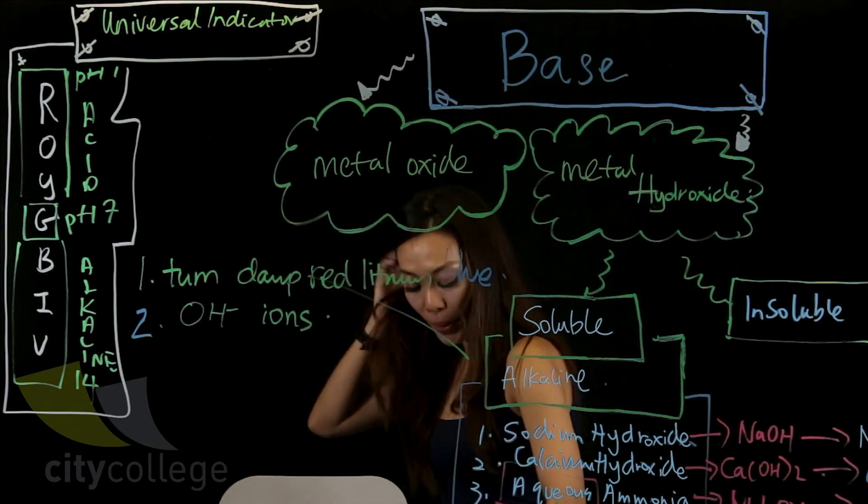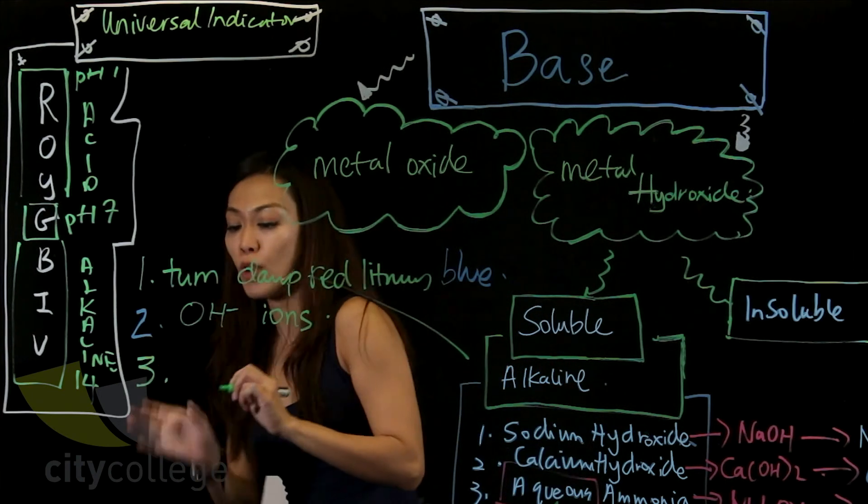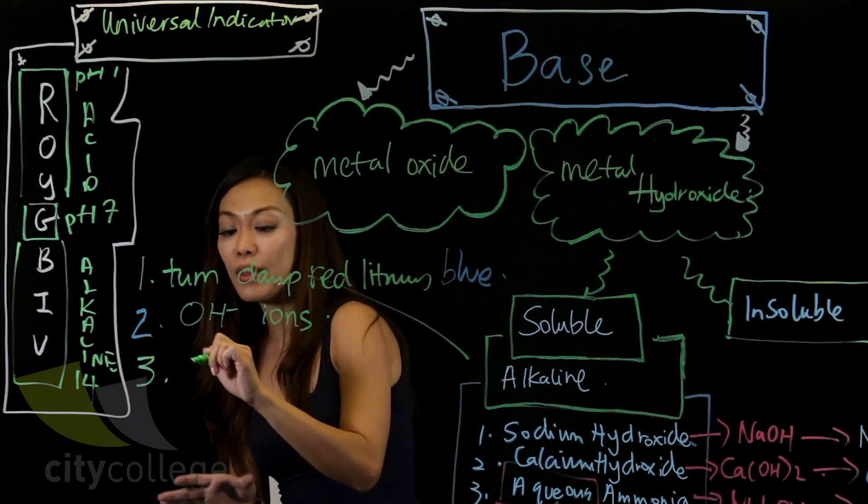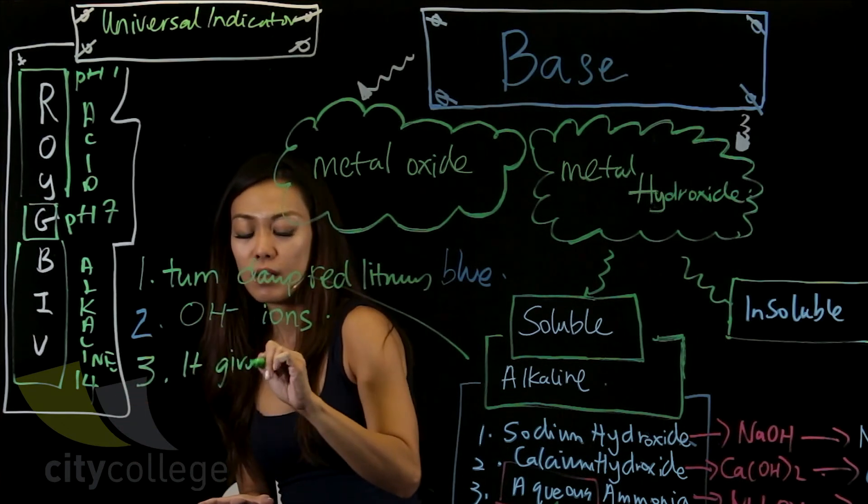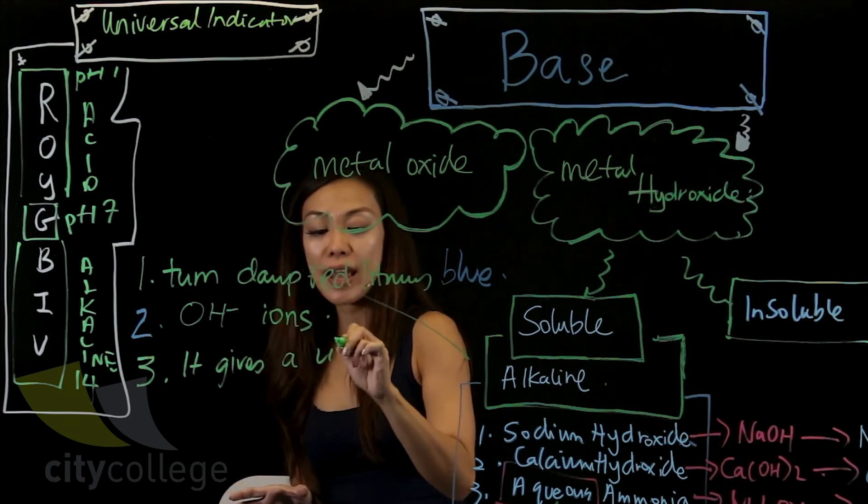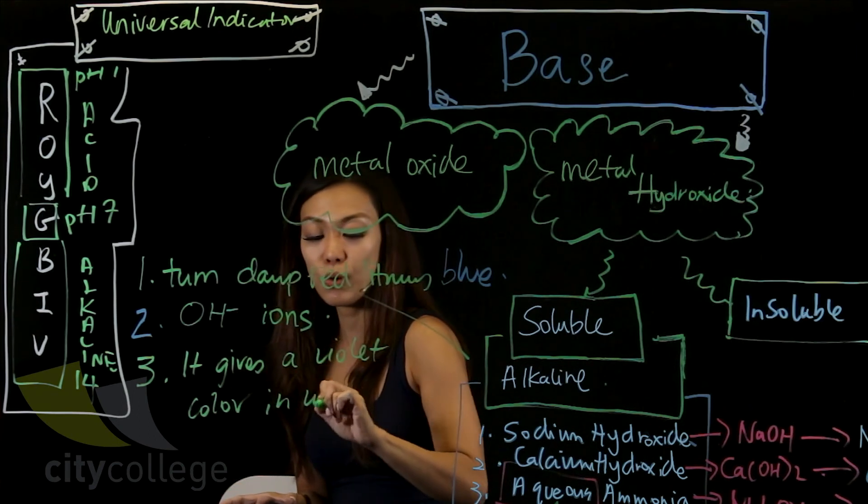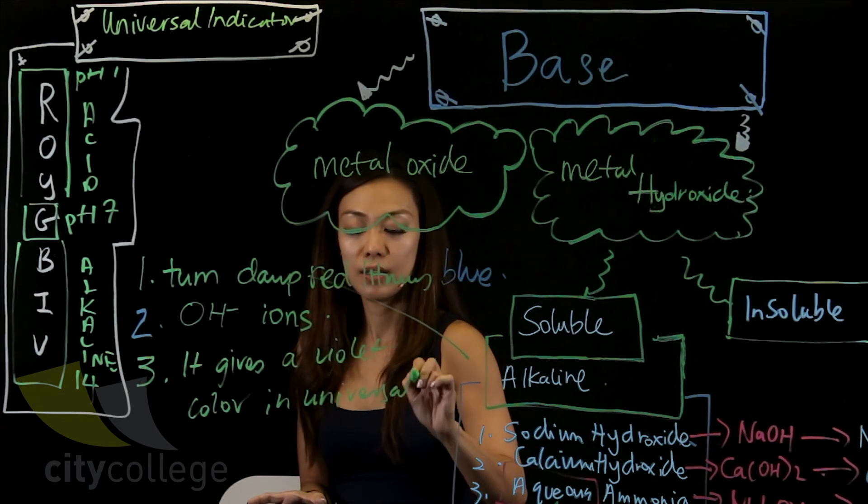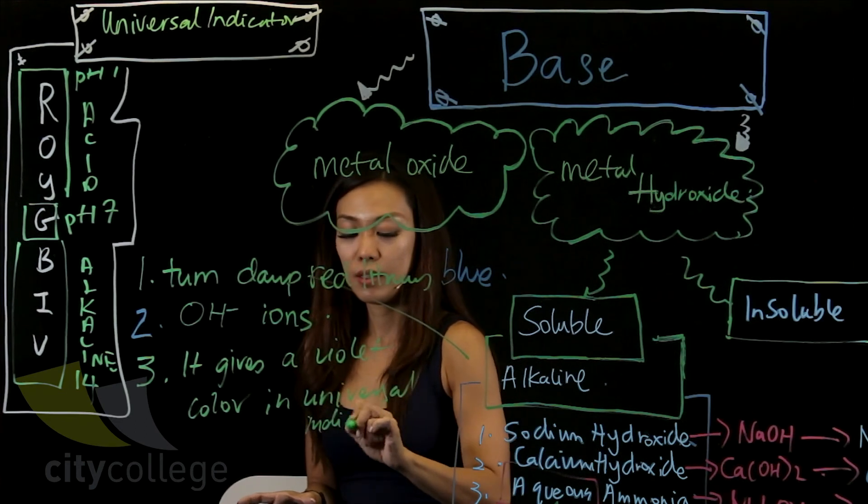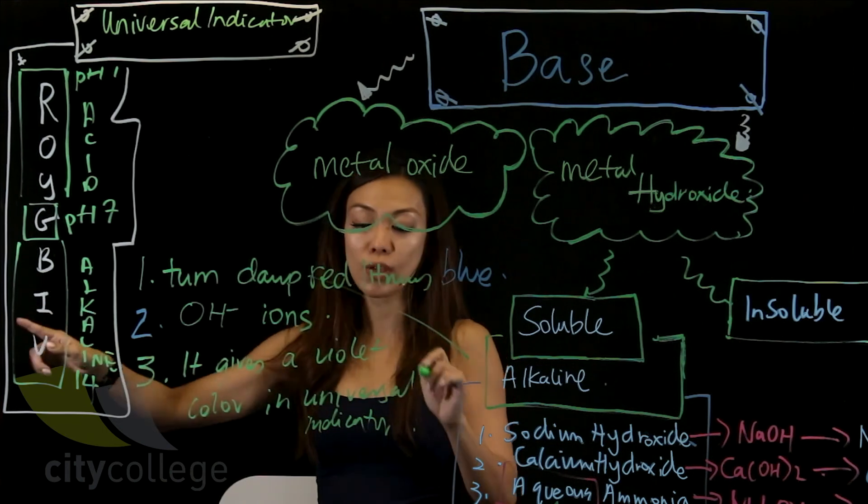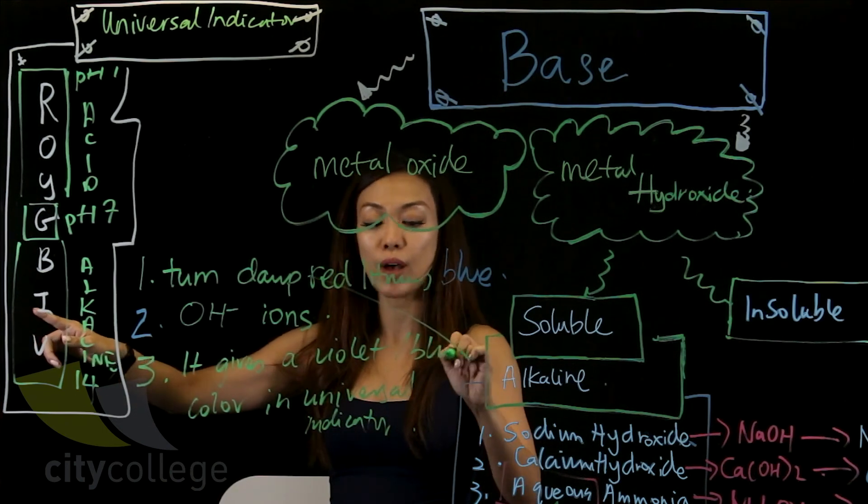So another property that I can, not assume, I can write here is that it will give a violet colour in universal indicator. To make it more specific, you can say violet or even blue to violet colour.